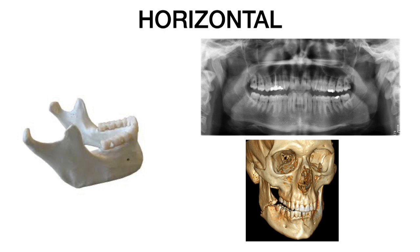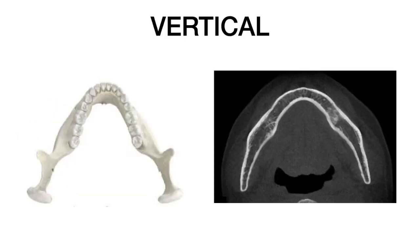How do you differentiate between horizontal favorable and unfavorable, and vertical favorable and unfavorable fractures? Horizontal favorable or unfavorable fractures entirely depend upon the view in which the mandible is viewed. For a horizontally favorable or unfavorable fracture, you can use X-rays such as OPG or a 3D CT scan. For the vertical side, it is with respect to the direction of the mandible when viewed from the top, and the X-ray or scan used is the axial CT scan.